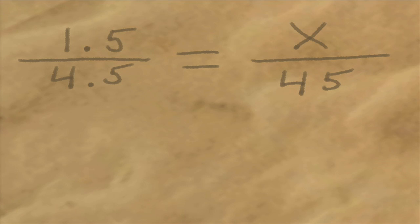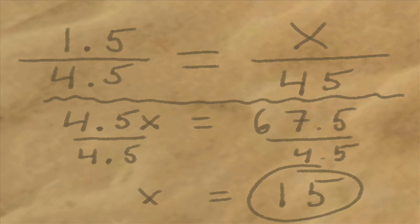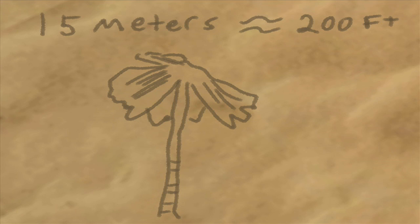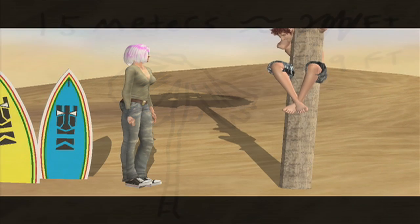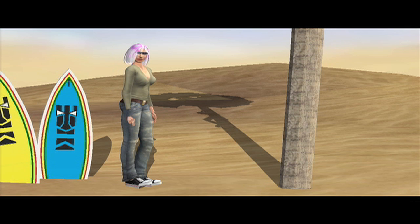Okay, we'll use an X. Now we just solve the proportion. X equals 15 meters. That's like 200 feet for you Americans. That's more like 50, dude. Whatever. I'm going for a coconut. Suit yourself, dude. Come back later and we'll calculate how long it takes a surfer to fall 15 meters.